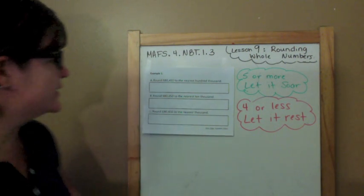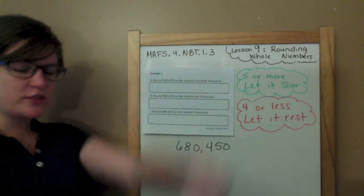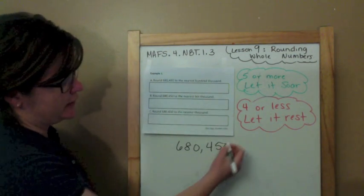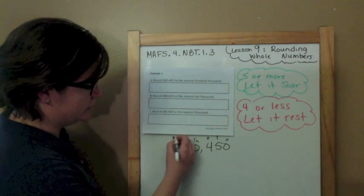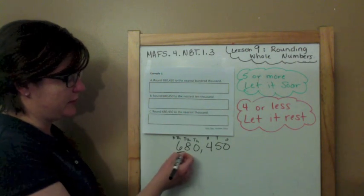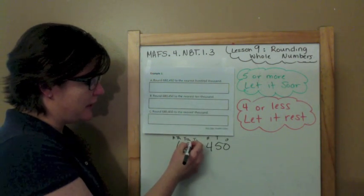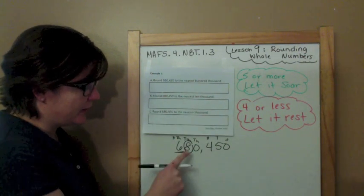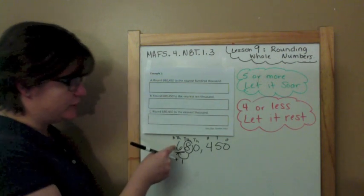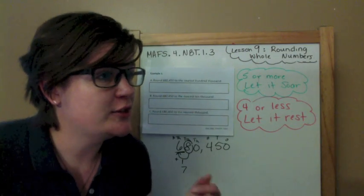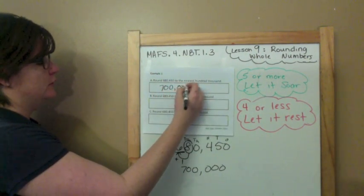Part A: Round 680,450 to the nearest 100,000. Step one, find the 100,000's place — ones, tens, hundreds, thousands, ten-thousands, hundred-thousands. When you round, find and underline the place. Spotlight to the right — decide the digit's fate. Eight is five or more, let it soar! Add one to the rounding place: six plus one is seven. And everything else becomes zeros. That's how you do part A.